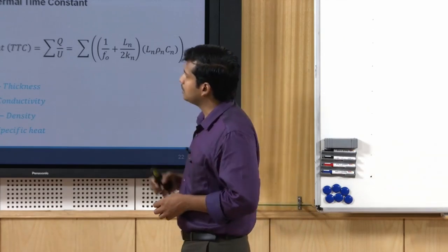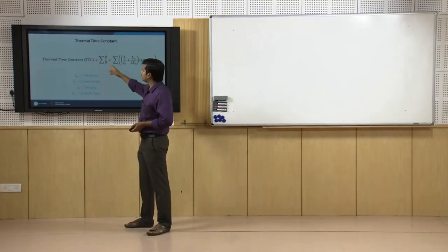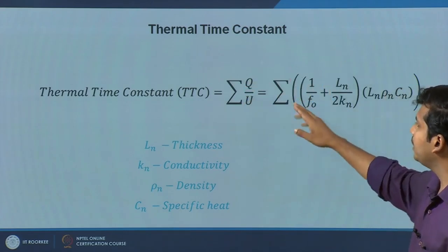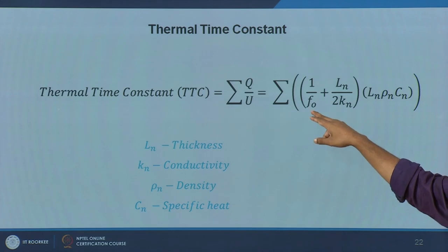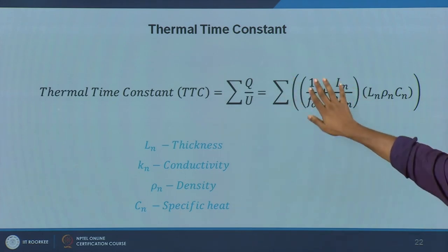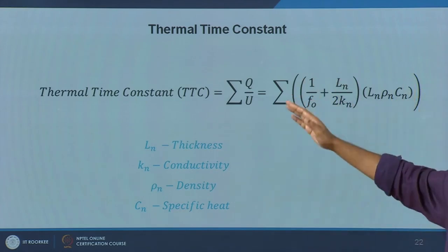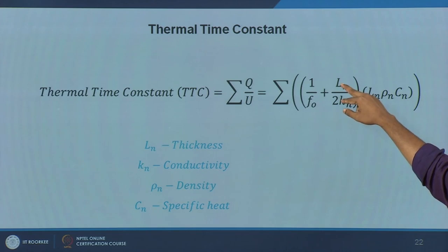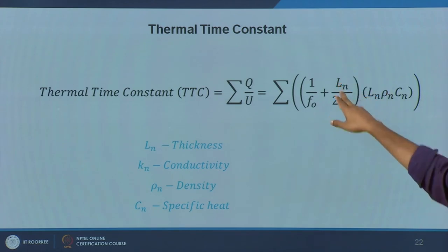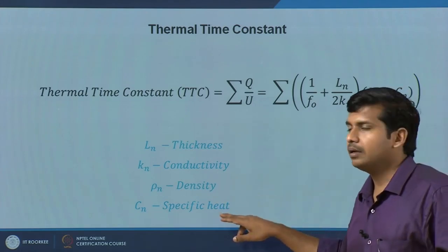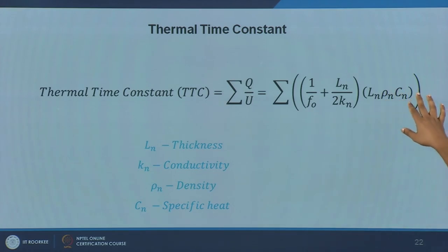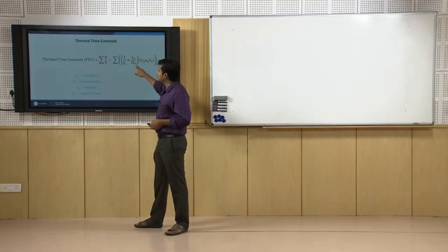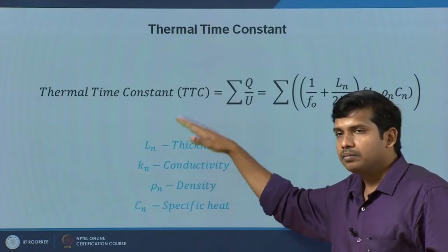The next factor discussed in the national building code is the thermal time constant (TDC). In simple terms, it is sigma Q (total heat gain) divided by the thermal transmittance U-value. It involves the surface coefficient, thickness, conductivity — effectively giving thermal resistance — plus density and specific heat. As density and specific heat increase, the thermal time constant goes up. As wall thickness increases, the thermal time constant also increases.